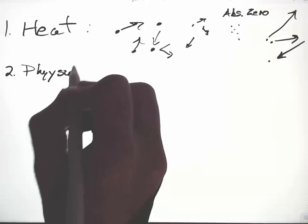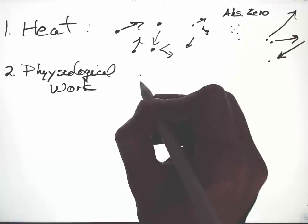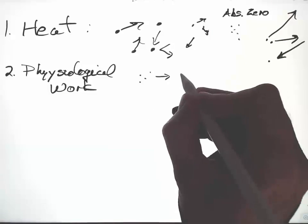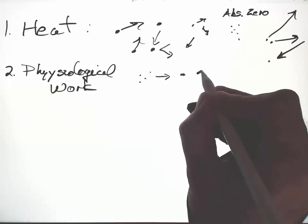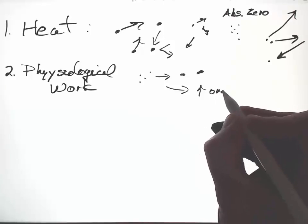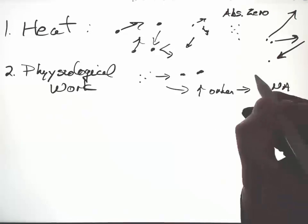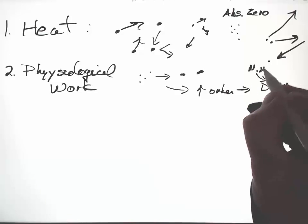Physiological work is the process in which an animal takes smaller molecules and converts them to larger molecules or carries out activities that increase order in some way. For example, synthesizing DNA from nucleic acids.